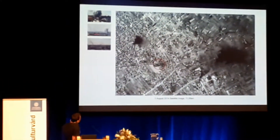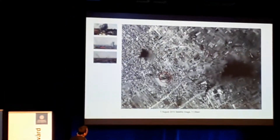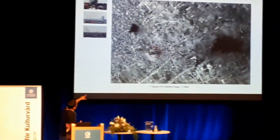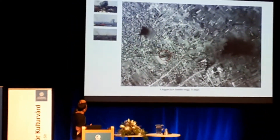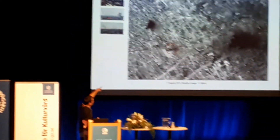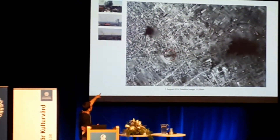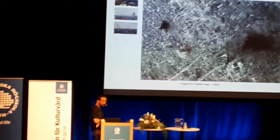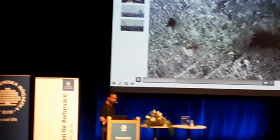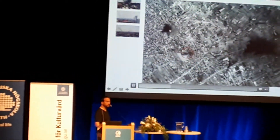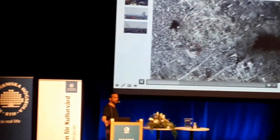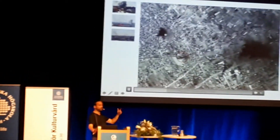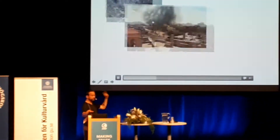We also see other things in this satellite image — for example, a bomb cloud just seconds after the explosion, just above it here. This is a rare thing to see in a satellite image. The satellite will come once a day at best.